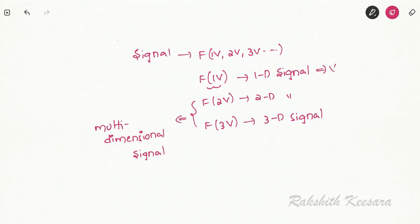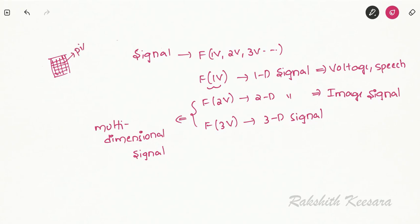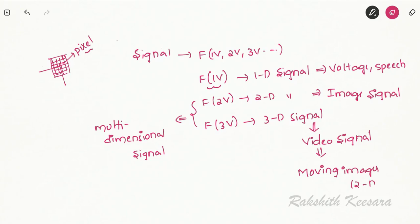The example for a 1D signal is voltage and speed signal, where it varies only with respect to time. The example for a 2D signal is an image signal — an image is divided into small parts called pixels, and to know the information of each pixel you need two dimensions, that's why image is a 2D signal. An example for a 3D signal is a video signal, where video is moving images. For an image you require two dimensions, and since they are moving you also require a third dimension — time — so video is a three-dimensional signal.